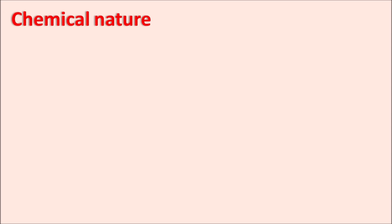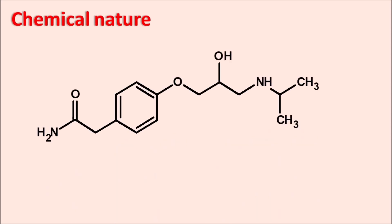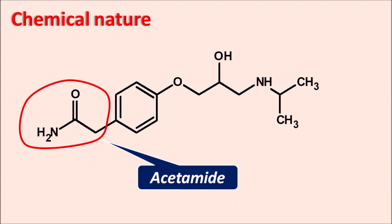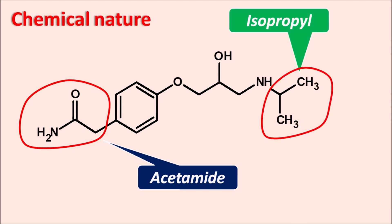First of all let us see the chemical nature of this drug. All the beta blockers are aryl oxypropanol amines. Here the aryl ring is a simple phenyl ring attached with a functional group — the acetamide group. Atenolol has the acetamide functional group, and on the nitrogen of propanolamine one side chain is present: the isopropyl group. Because of this bulky group, the drug is selective towards beta receptors, and therefore atenolol acts as a selective beta-1 receptor antagonist.